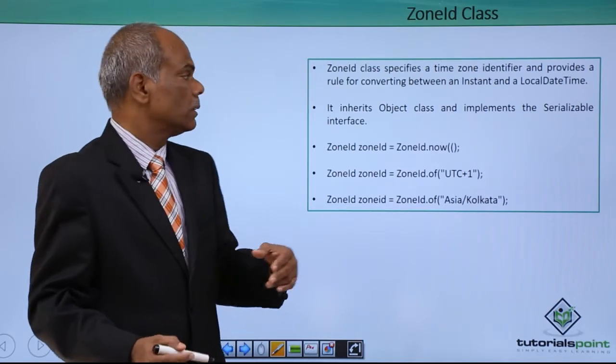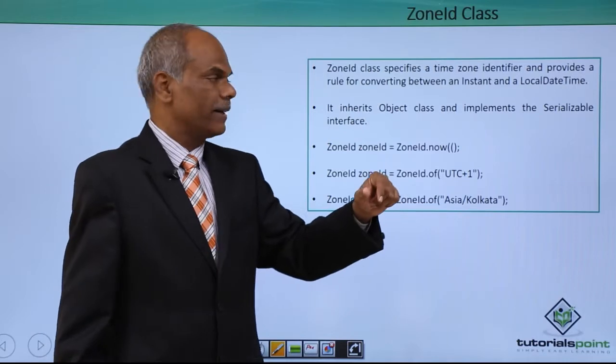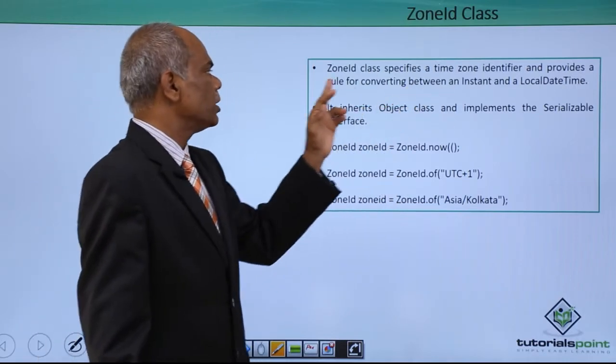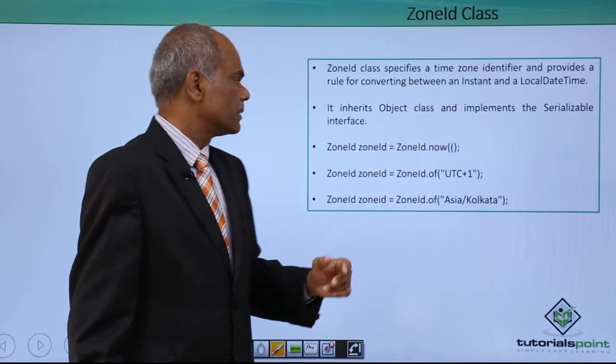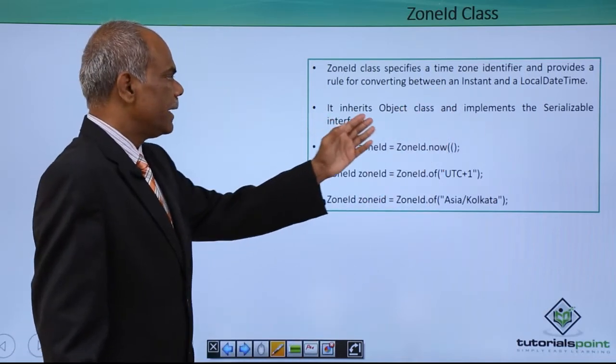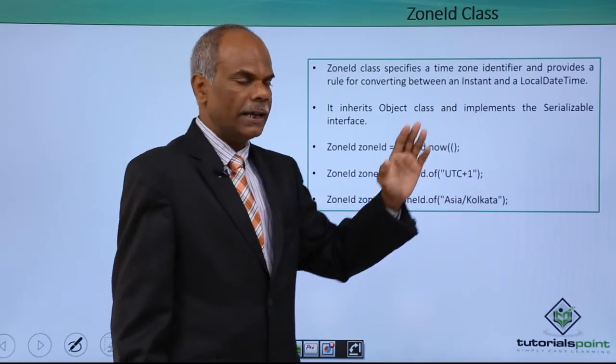ZoneID class. The ZoneID class specifies the time zone identifier and provides a rule for converting between the instant and local date class. It inherits the object class and implements the serializable interface.